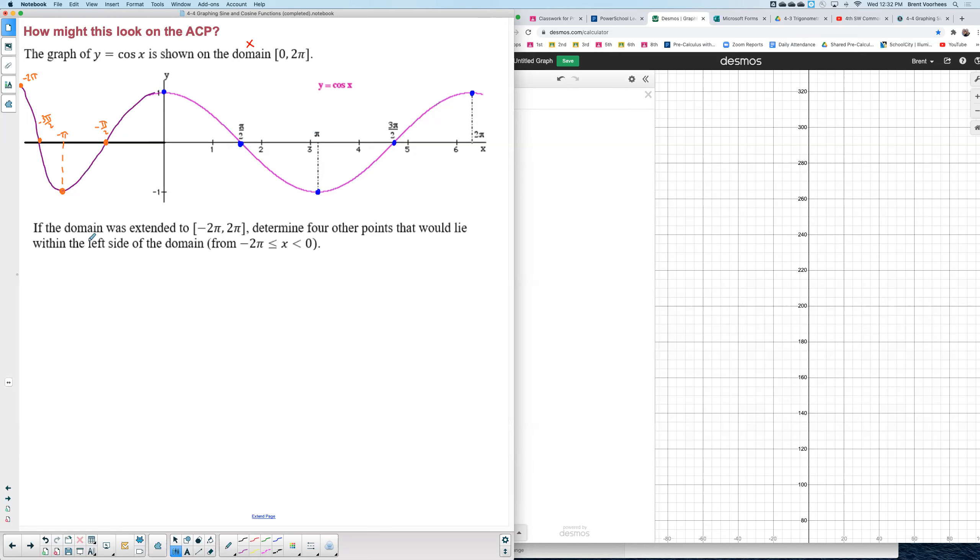So my four points going left to right: I would have negative two pi with a height of one. Again this is in the order of x comma y. And so the first that I would have is negative two pi comma one.